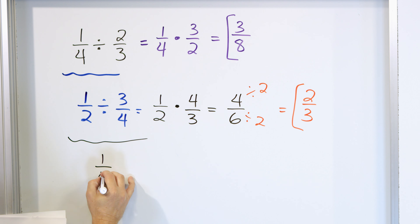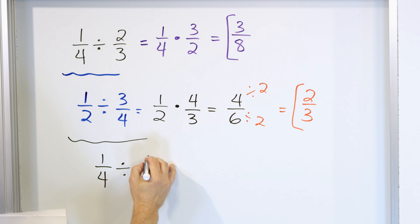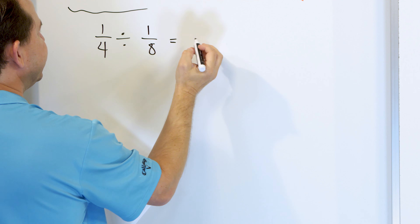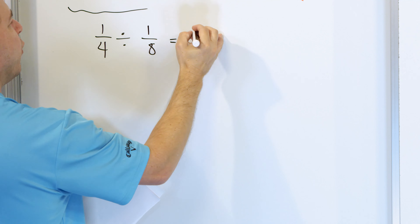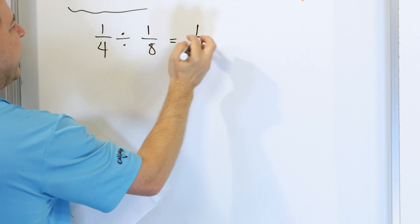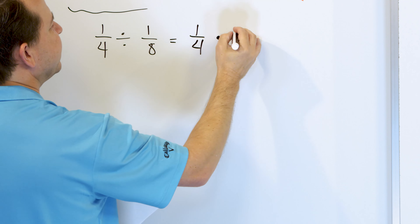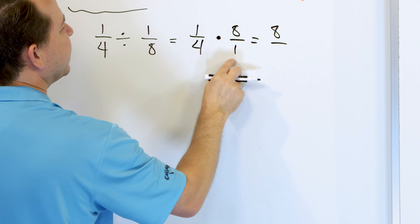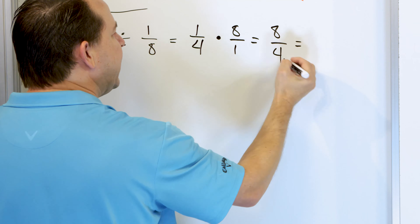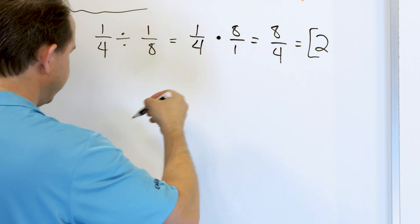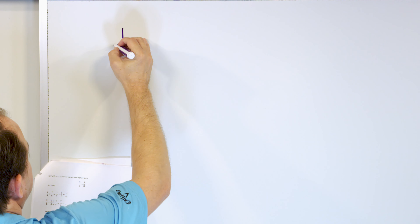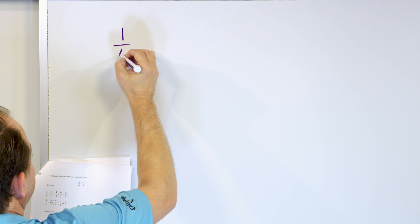What about 1/4 divided by 1/8? Leave the 1/4 alone, change to multiplication, flip the second fraction to 8 over 1. Eight times 1 is 8, and 4 times 1 is 4. Eight divided by 4 is 2. Two is exact and that is the final answer. It's actually quite simple.